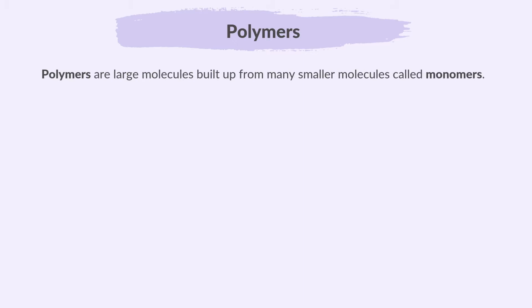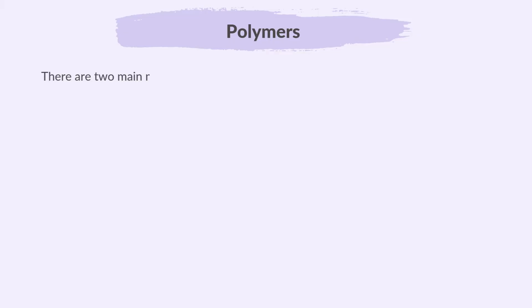Polymers are large molecules built up from many smaller molecules called monomers. Poly stands for many and mono stands for one, so monomers join together through polymerization to form polymers. There are two main methods of polymerization: addition polymerization and condensation polymerization.